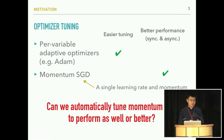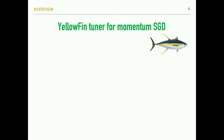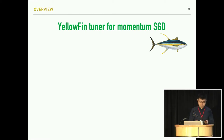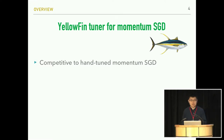The natural question to ask is: can we automatically tune the momentum SGD hyperparameters so that we can achieve similar performance as hand-tuned momentum SGD, and simultaneously enjoy easier hyperparameter tuning? To answer this question, in this work we proposed the Yellowfin tuner to automatically tune hyperparameters for momentum SGD. I will show that the Yellowfin tuner can achieve competitive performance to hand-tuned momentum SGD in various types of models in our experiments.